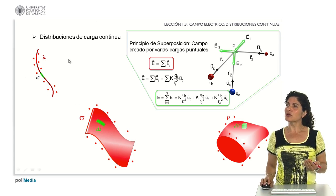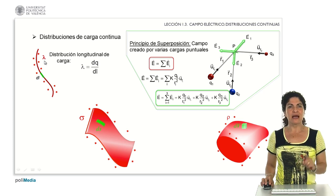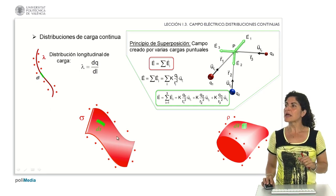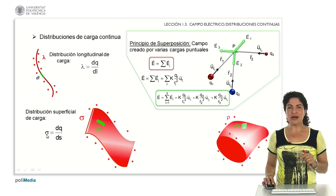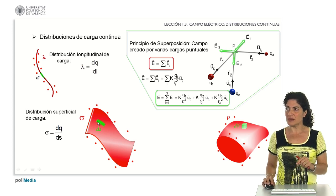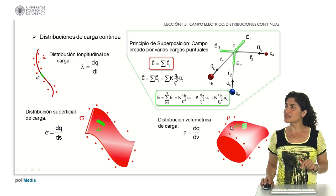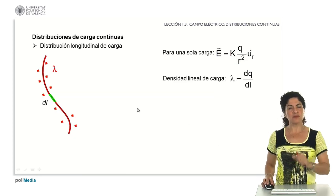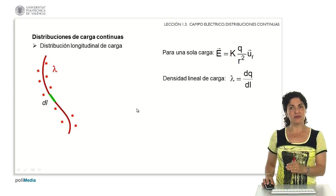For the longitudinal case, lambda is the linear charge density: differential charge divided by differential length, corresponding to the small piece of charge inside that small piece of the distribution. For the surface distribution, sigma is the surface charge density: differential charge divided by differential surface area. For the volumetric distribution, rho is the volumetric charge density: differential charge divided by the volume differential — the small cube taken for the volumetric distribution.